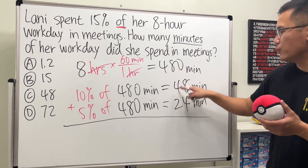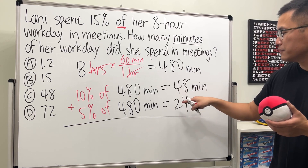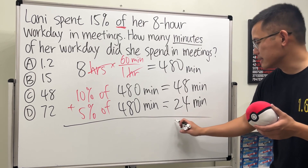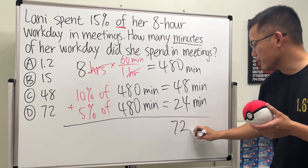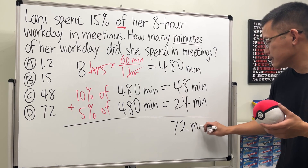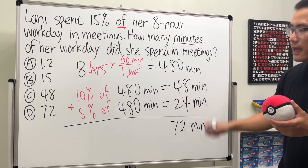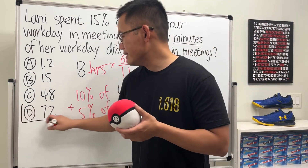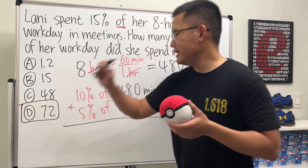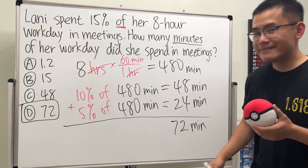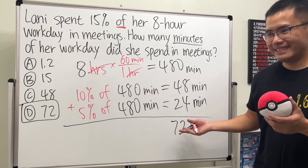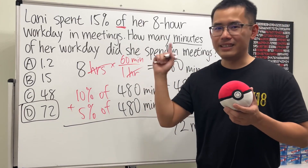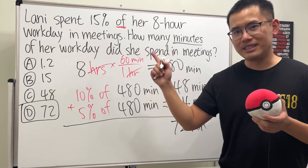Adding it up: 8 plus 4 is 12, carry the 1, then 1 plus 4 plus 2 gives us 72 minutes. So the answer is 72 minutes — that's option D. Check out my next question in the playlist!